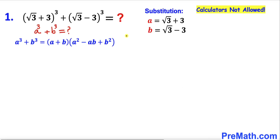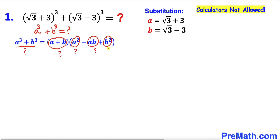Now let's recall the famous identity for a cubed plus b cubed. Since we want to find the value of a cubed plus b cubed, we are going to find the value of a plus b, a squared, ab, and b squared. Let me call this identity equation number one.